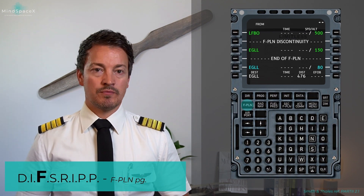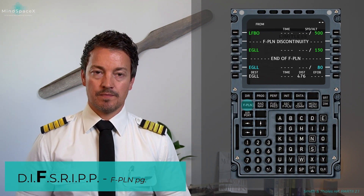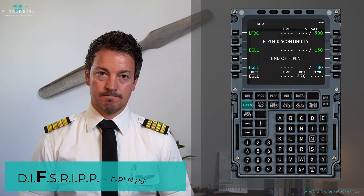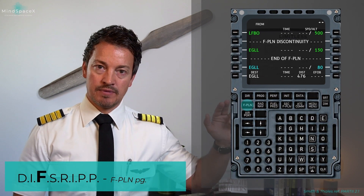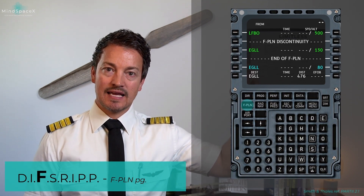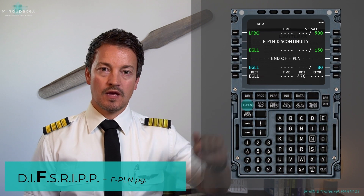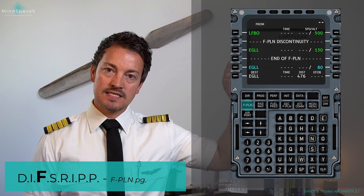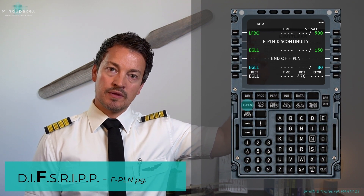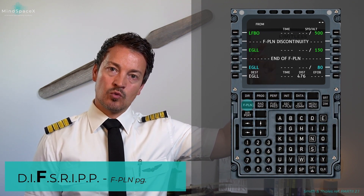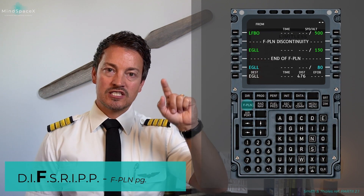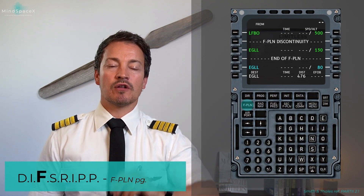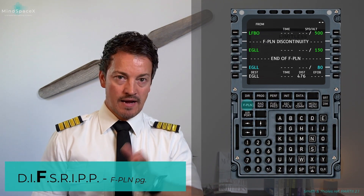How do we enter information into a departure? We use either lateral or vertical revision. Now that we are on the flight plan page, the line select keys have a different function. If I select any of the left keys, I am saying I want to change something from that point in the lateral plane — meaning I want to change the flight plan laterally.